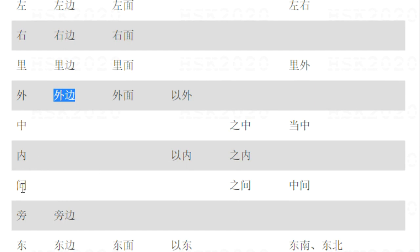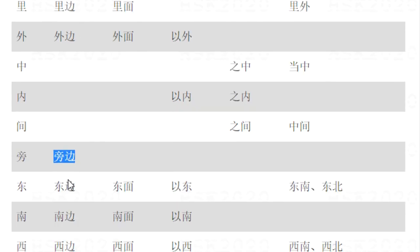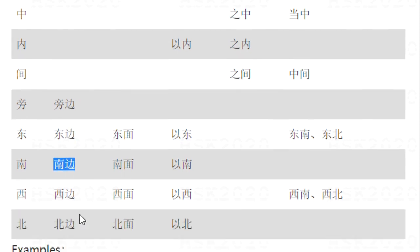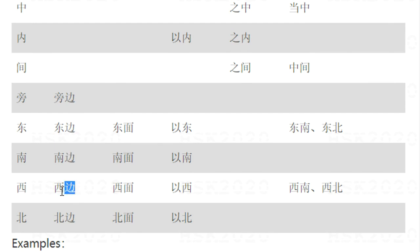内 means inside — no 边 form. 间 means between — no 边 form. 旁 means nearby; 旁边 — yes, nearby. 东, 南, 西, 北边: east side, south side, west side, and north side.